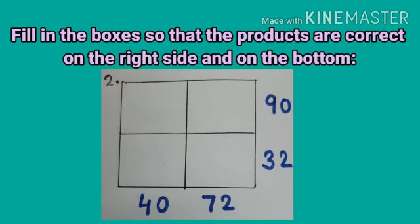90 it is very easy. In which table we are having 90? Yes, 10 table. 10 9s are 90 and 9 how many times 72? Yes, 9.